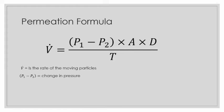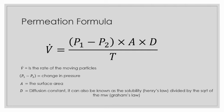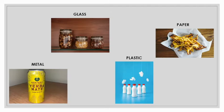is the surface area, D is the diffusion constant and can also be known as the solubility in Henry's law divided by the square root of the molecular weight in Graham's law, T is the thickness of the material.